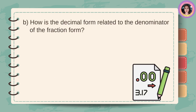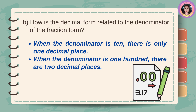How is the decimal form related to the denominator of the fraction form? When the denominator is 10, there is only 1 decimal place. When the denominator is 100, there are 2 decimal places.